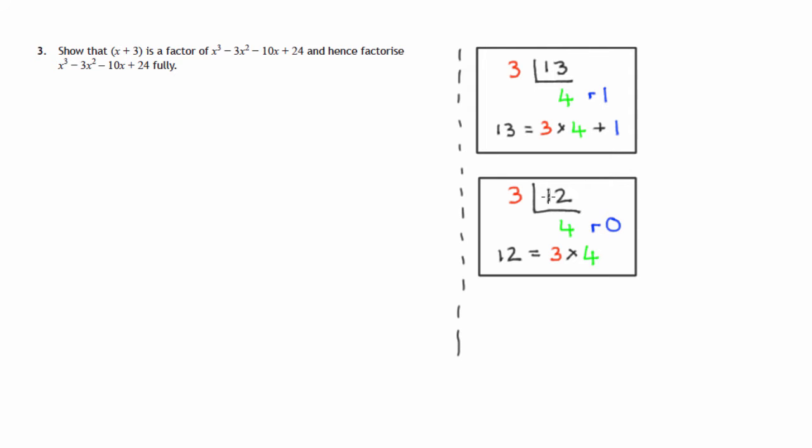Another example, here's the number 12. Likewise, we're dividing it by 3. It goes 4 times, but this time there's no remainder because we know 12 is 3 times 4.